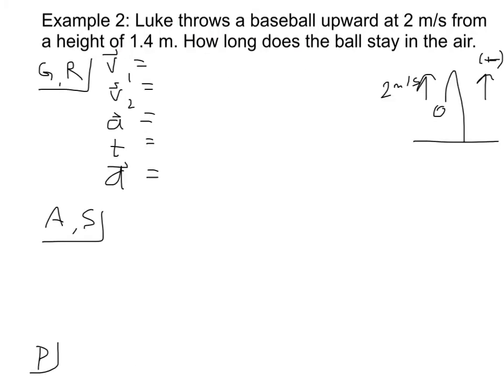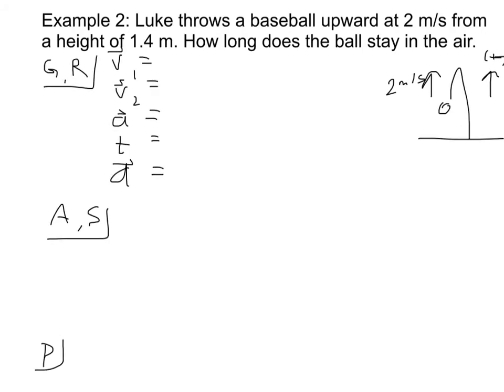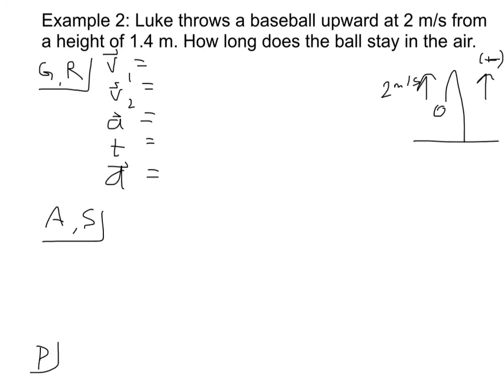And one more example. Luke throws a baseball upward at 2 meters per second from a height of 1.4 meters. How long does the ball stay in the air? So again, I've drawn us a diagram. I've got the ball here, and its initial trajectory is upwards. It throws it upwards at 2 meters per second. And you can see here I've defined upwards to be positive as well. And I've just kind of drawn the trajectory the ball is going to take. It's going to go up and then come back down.